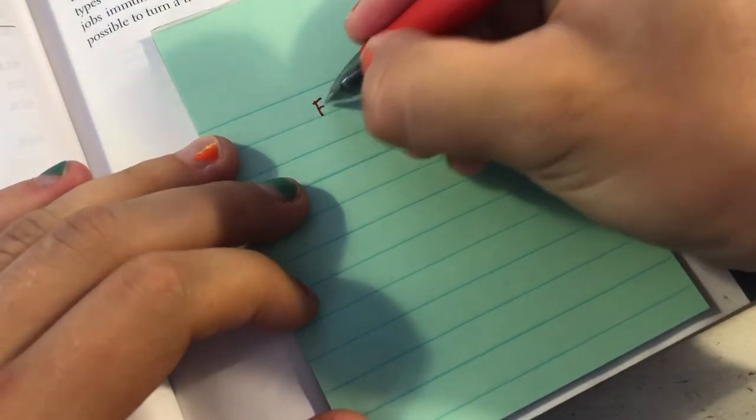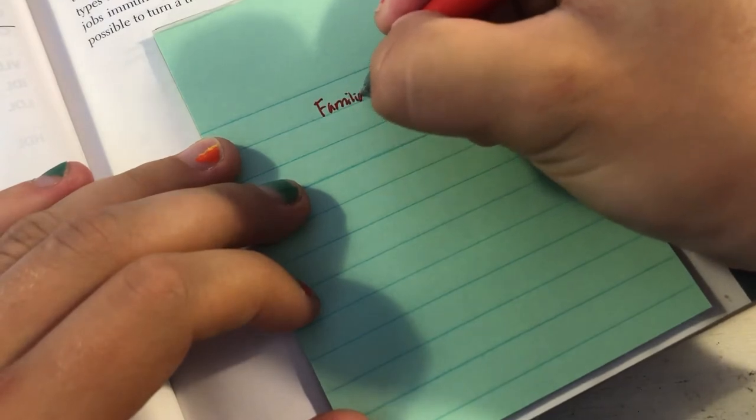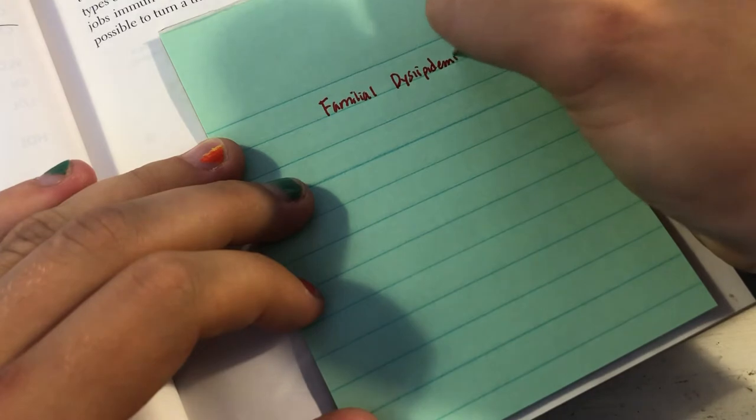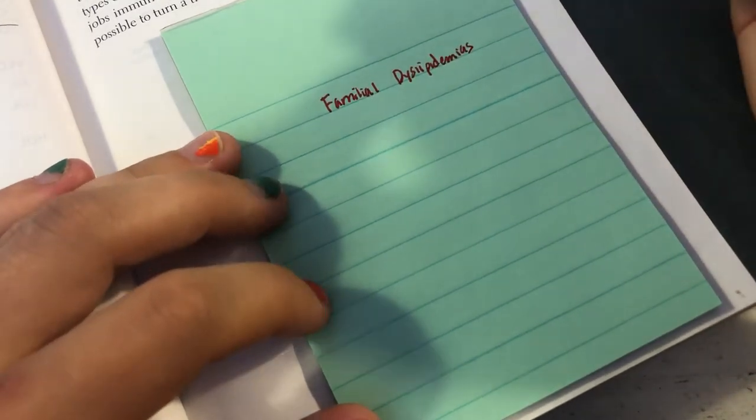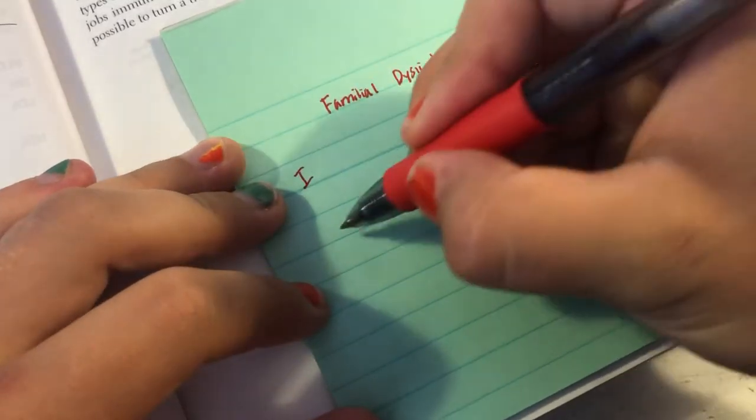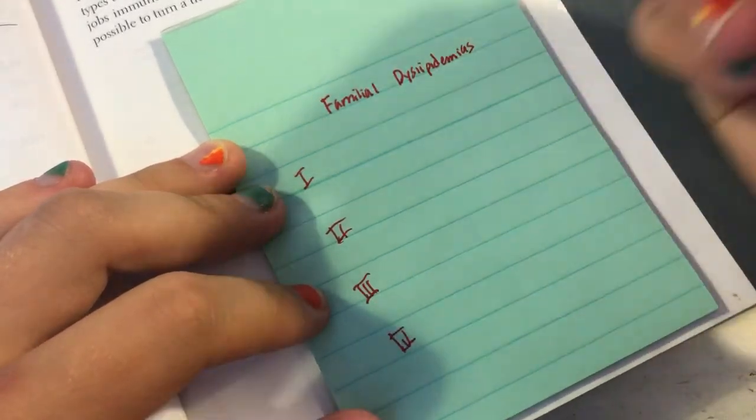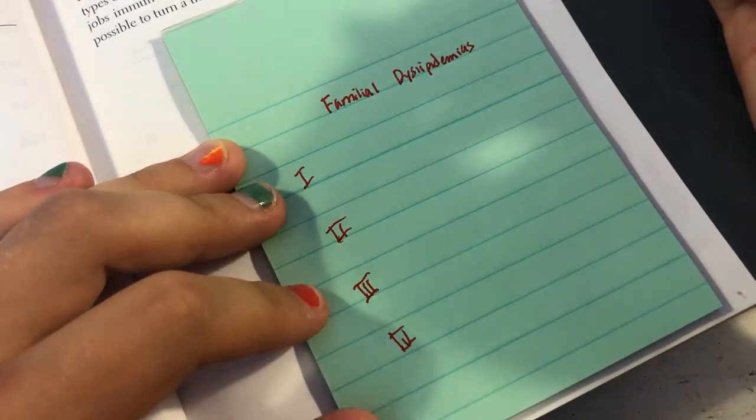Hey you guys, if you're studying for step one like me and are having trouble remembering the different types of familial dyslipidemias, then hopefully this helps you. So as you know, there's four types and I'm gonna organize them based on what the defect is and on what the main result or effect is.